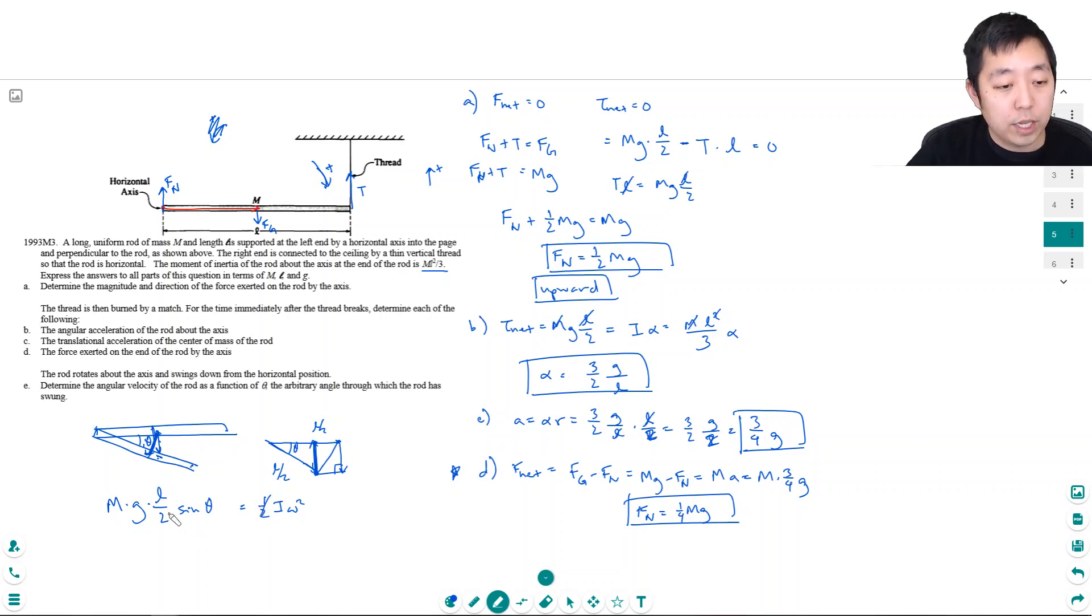Okay, these one halves will cancel. Oh, and this I is ml squared over 3 times omega squared. So the m's will also cancel, one of the l's will cancel. So I can multiply by 3, so I get 3g sine theta divided by l equals omega squared. So then omega equals the square root of 3g sine theta over l.